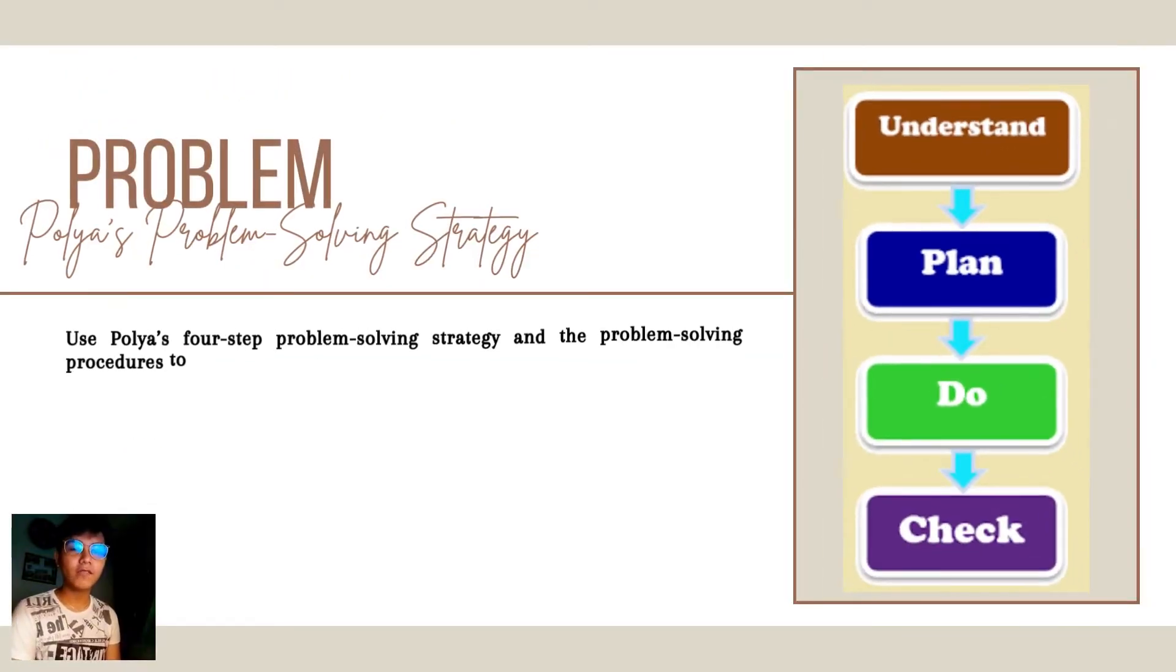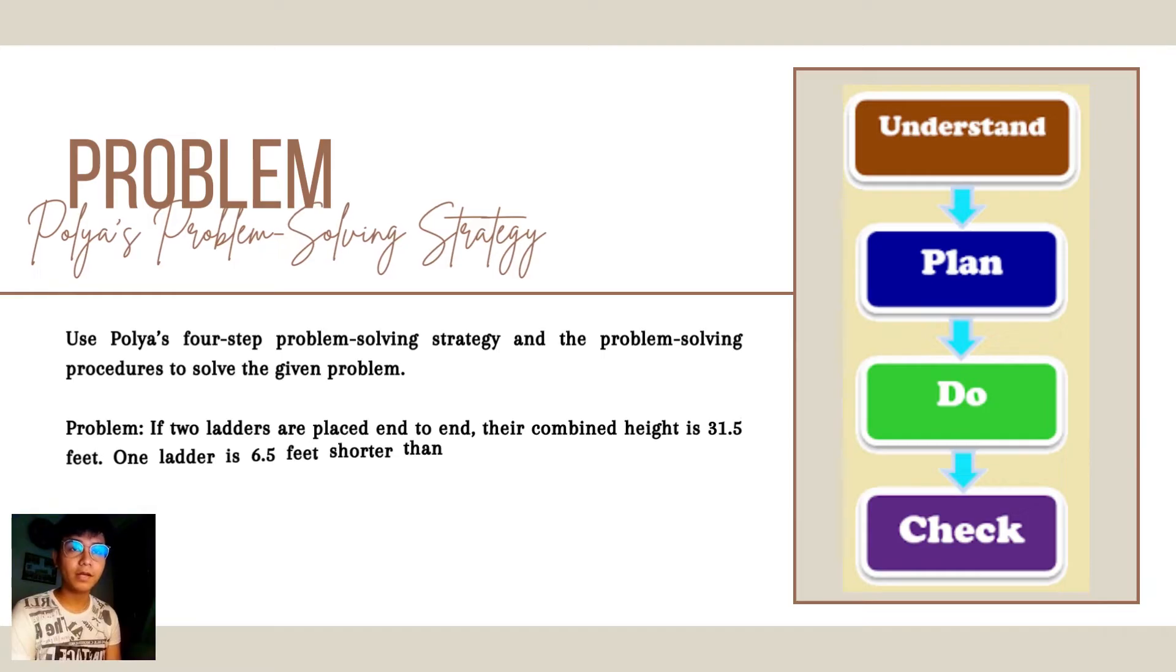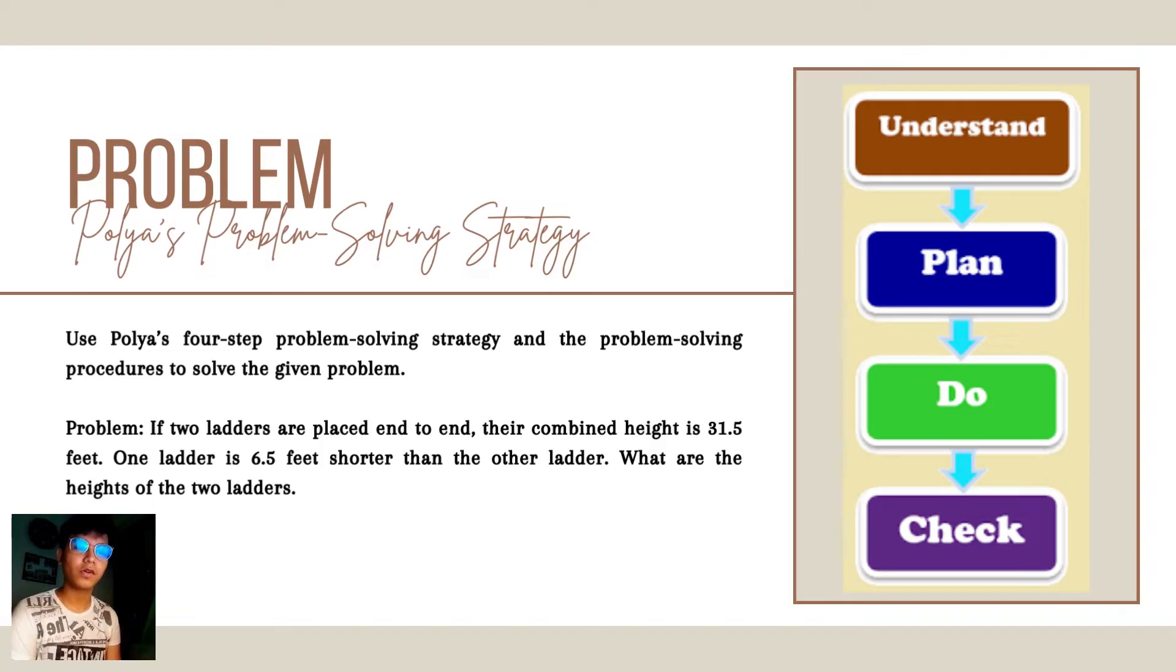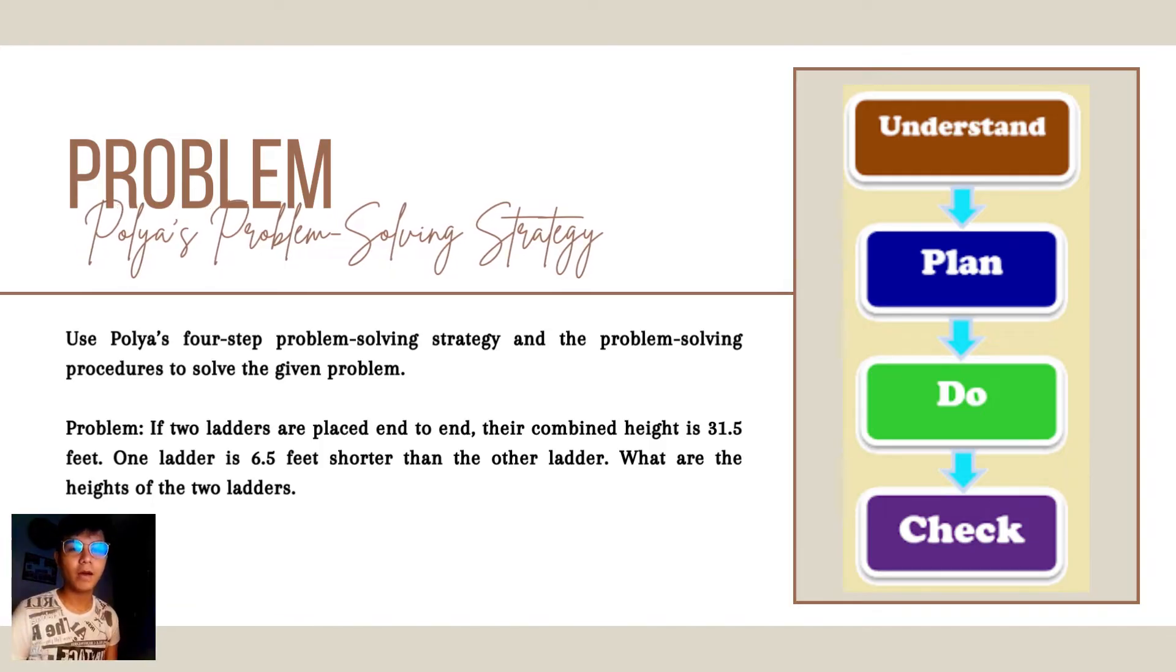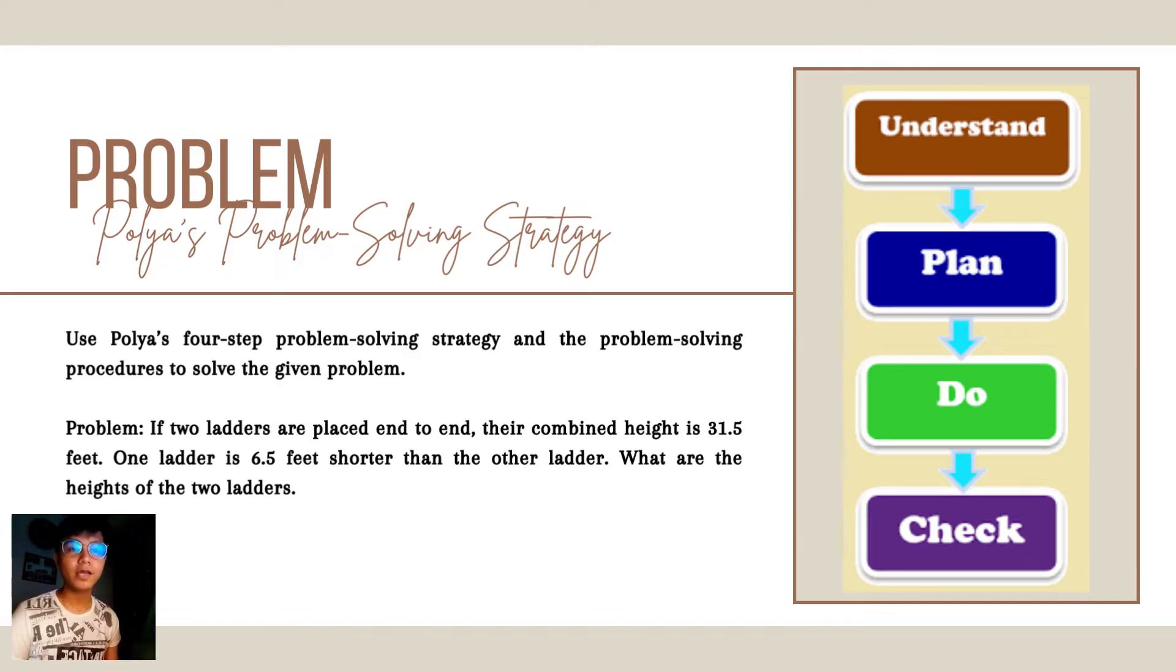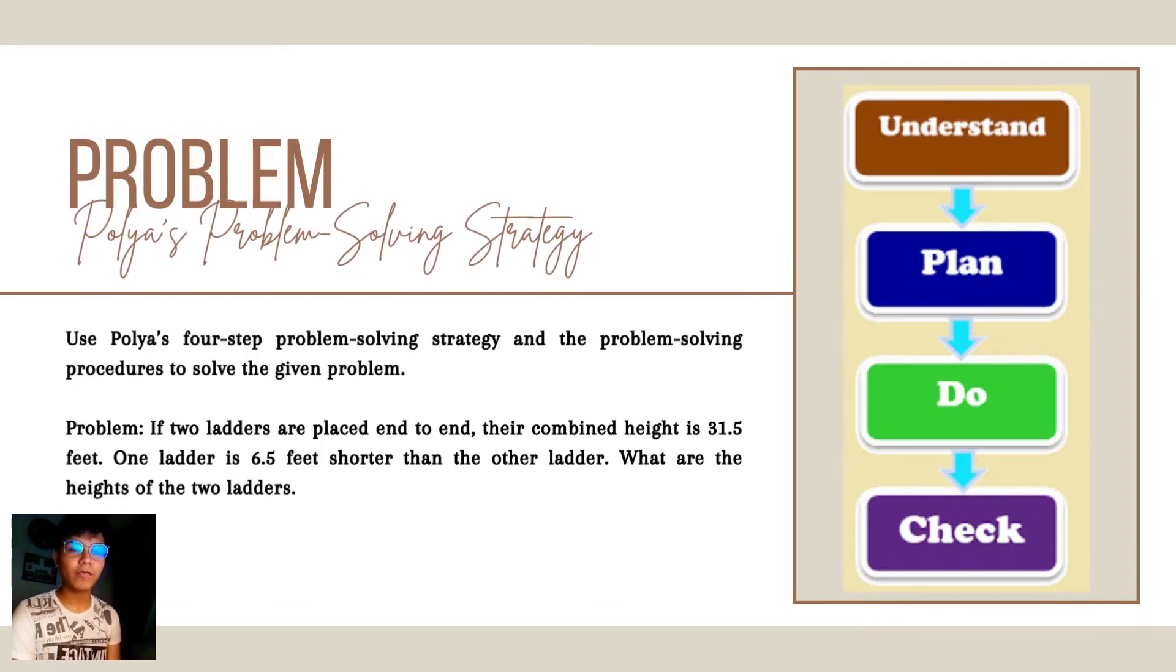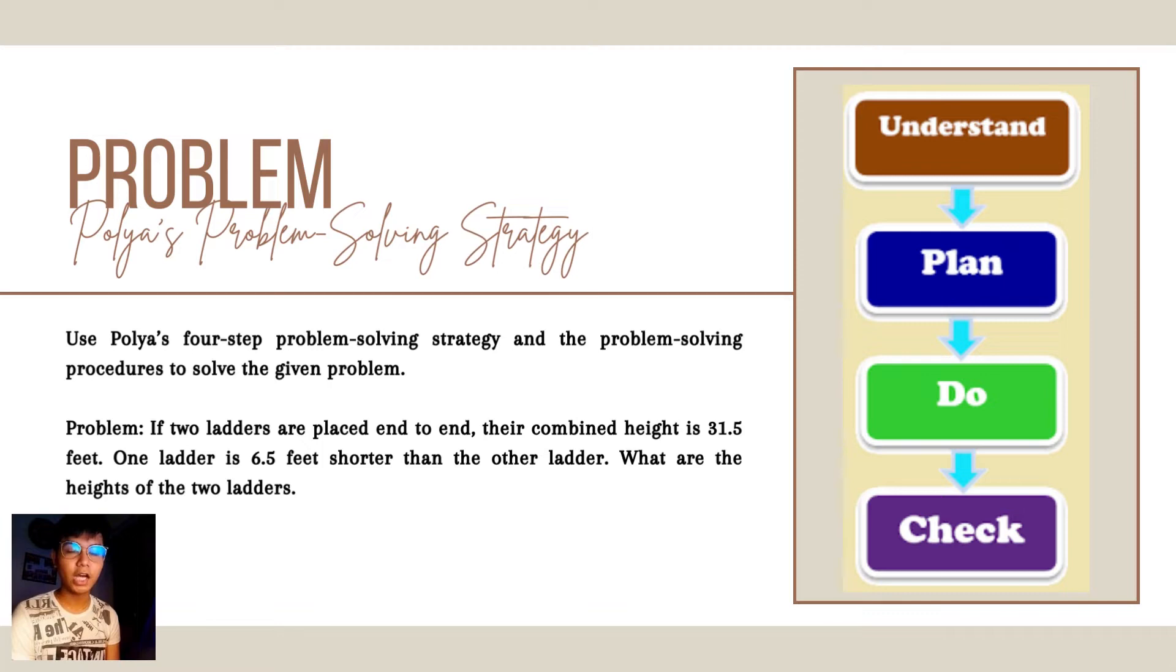The task given to me is about a problem. Use Polya's four-step problem solving strategy and the problem solving procedures to solve the given problem. The problem is: if two ladders are placed end-to-end, their combined height is 31.5 feet. One ladder is 6.5 feet shorter than the other ladder. What are the heights of the two ladders?